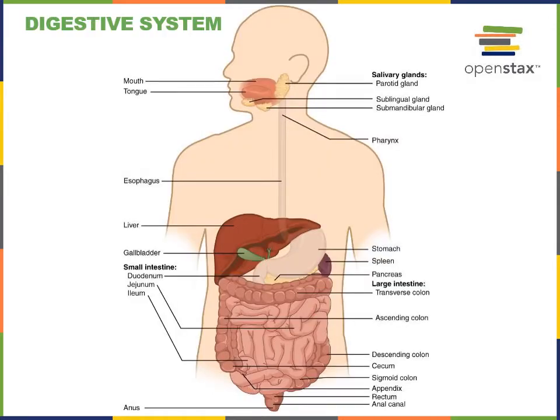The stomach receives a bolus from the esophagus. The bolus is then mixed with gastric juice through the mechanical digestion mechanism of churning, when the muscularis of the stomach wall contracts. The gastric juice has a low pH, which helps to denature proteins and also activates the enzyme pepsin, which is secreted from gastric pits as an inactive precursor known as pepsinogen.